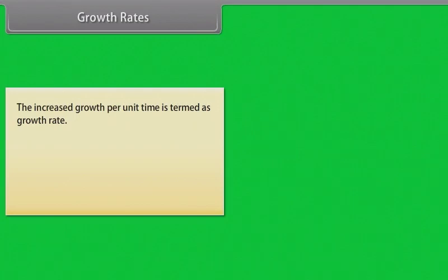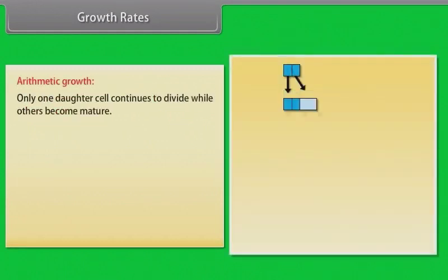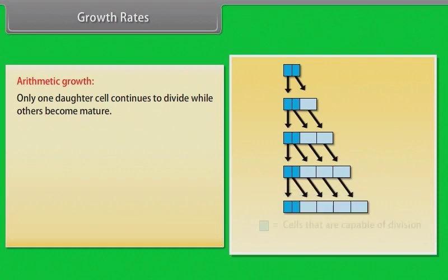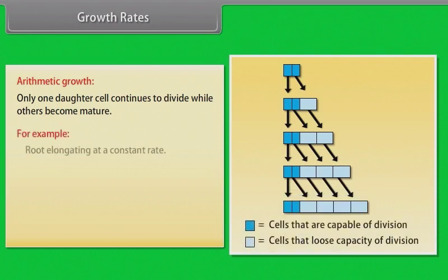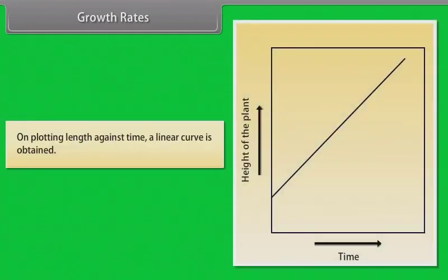Growth Rates: The increased growth per unit time is termed as growth rate. Plants show two types of growth — arithmetic and geometric. Arithmetic growth: Only one daughter cell continues to divide while others become mature. For example, root elongating at a constant rate. Mathematically, Lt = L0 + Rt, where Lt is length at time t, L0 is initial length, and R is growth rate. On plotting length against time, a linear curve is obtained.